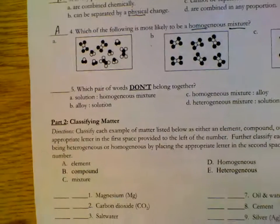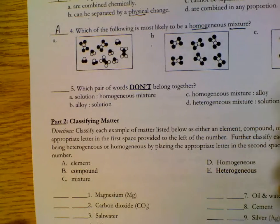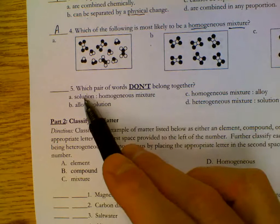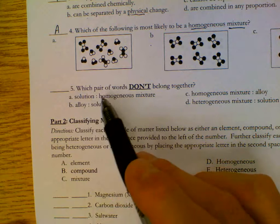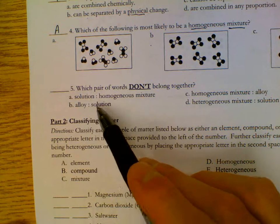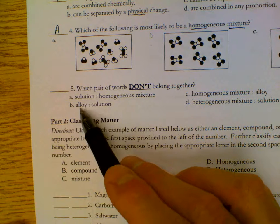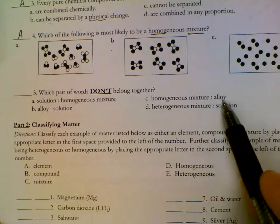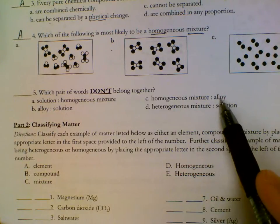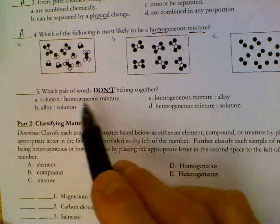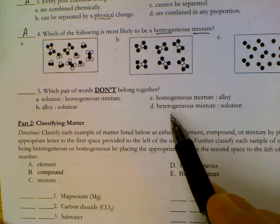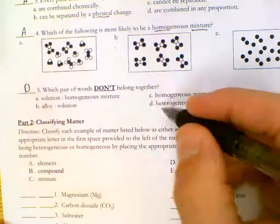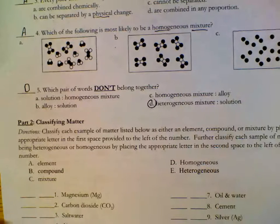Which pair don't belong together? Solution, homogeneous mixture - these can, because another name for homogeneous mixture is solution. Alloy and solution, they can go together because these are the same, solution of metals. Homogeneous mixture and then alloy both can go together because a solution of metals is a homogeneous mixture. Finally, heterogeneous mixture and solution, choice D. These do not mean the same thing.